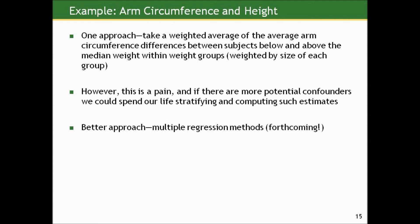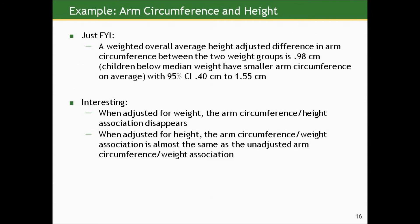That weighted average method is cumbersome and gets complicated quickly. If there are more potential confounders — and certainly with anthropometric measures there probably are, like age or nutritional status — we could spend our whole time stratifying. How would we take into account more than one potential confounder at once? It gets very difficult by stratifying. A better approach we're building towards in this class is multiple regression methods, which will really show how we can get these adjusted estimates. I want to give you the flavor of what goes on behind the scenes, but we'll worry about doing it ourselves when we get to regression.